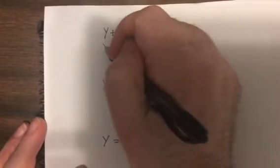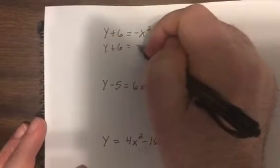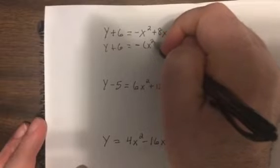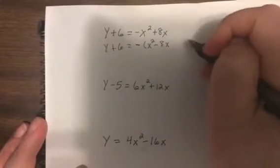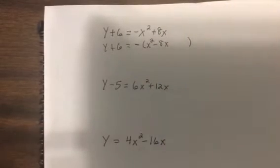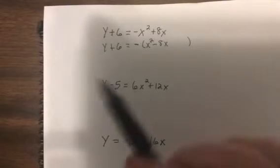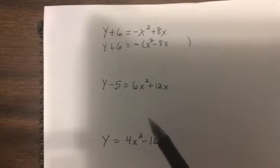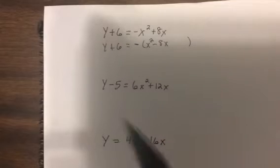So here, first thing I need to do is factor out that negative, so it becomes x squared minus 8x. Now, let me stop. If you have no clue what you're doing, just watch what I do. If you know what you're doing, do it first, and then turn me back on, so you can see if you're doing it right.